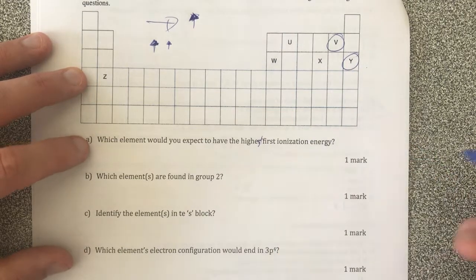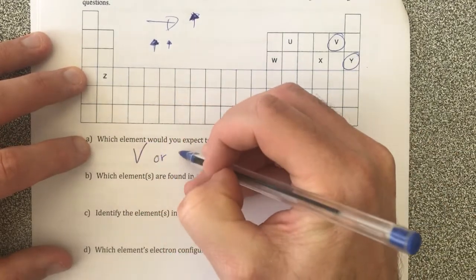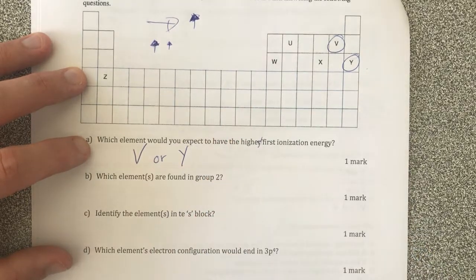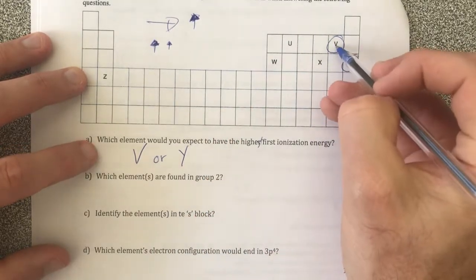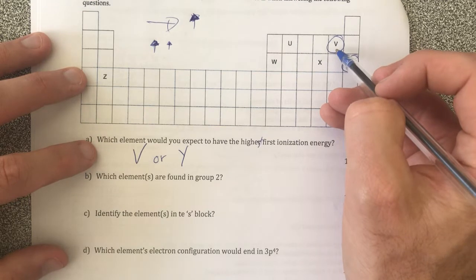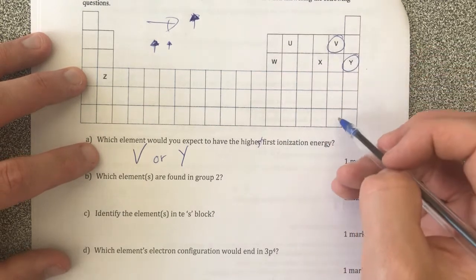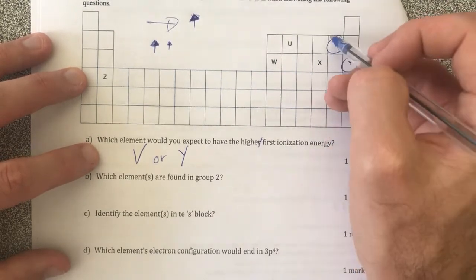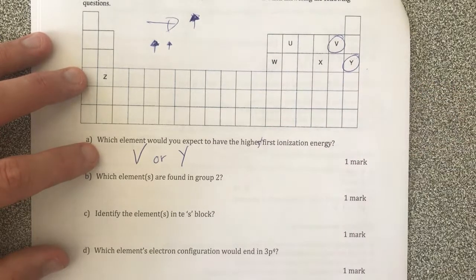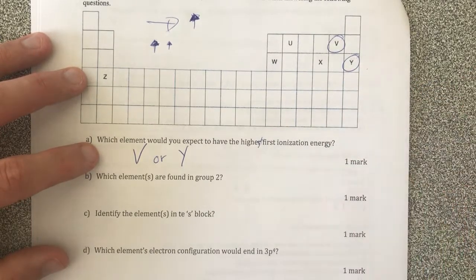So I'm gonna put either V or Y in that case. V is by default what our first ionization energy should say because it's higher up in the periodic table, but I also know that Y is a noble gas and it doesn't want to react and doesn't want to lose electrons whatsoever.